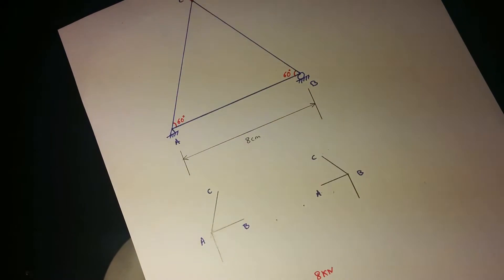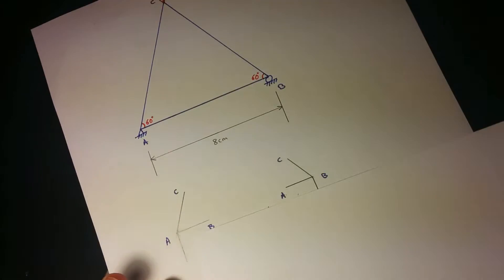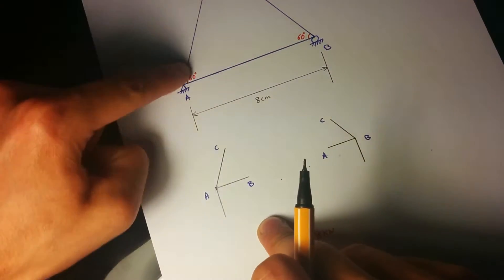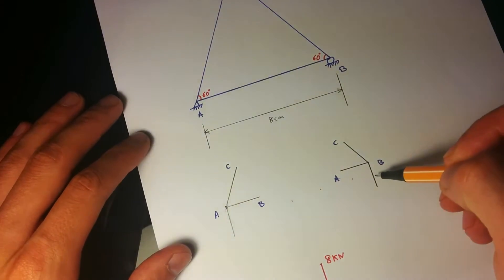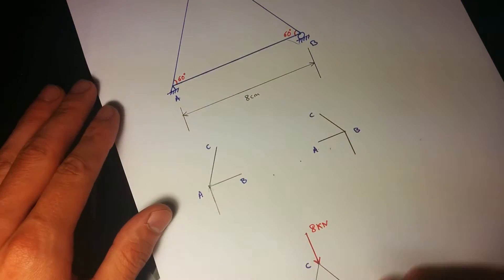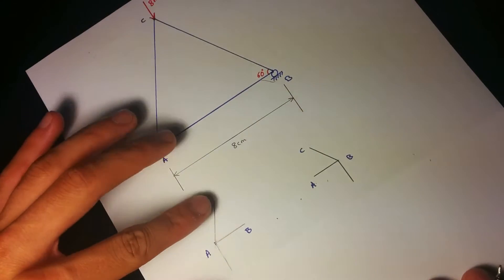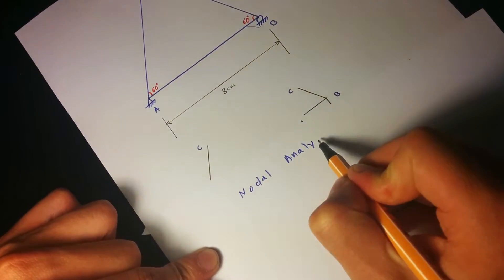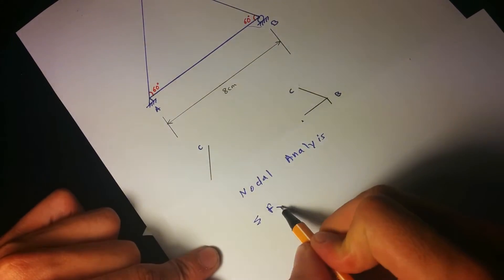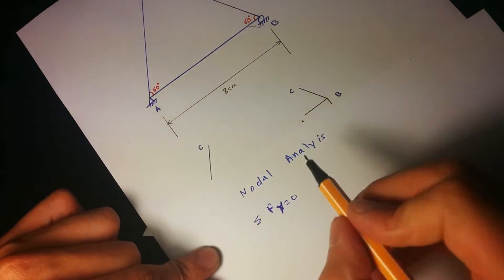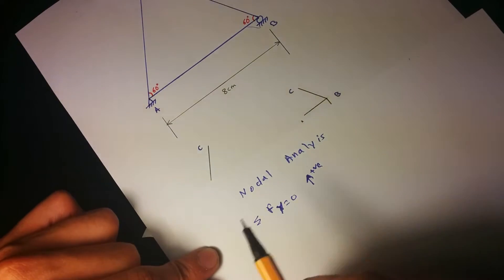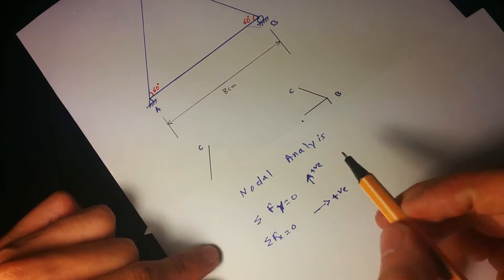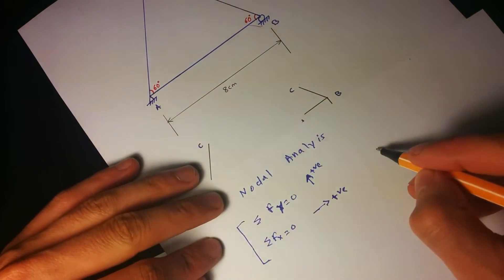Now we move on and do the nodal analysis. I've drawn the nodes — this is node A. For nodal analysis we use the sum of forces in the y-direction equals zero and the sum of forces in the x-direction equals zero. Since we have two equations, we can solve only two unknowns per node.